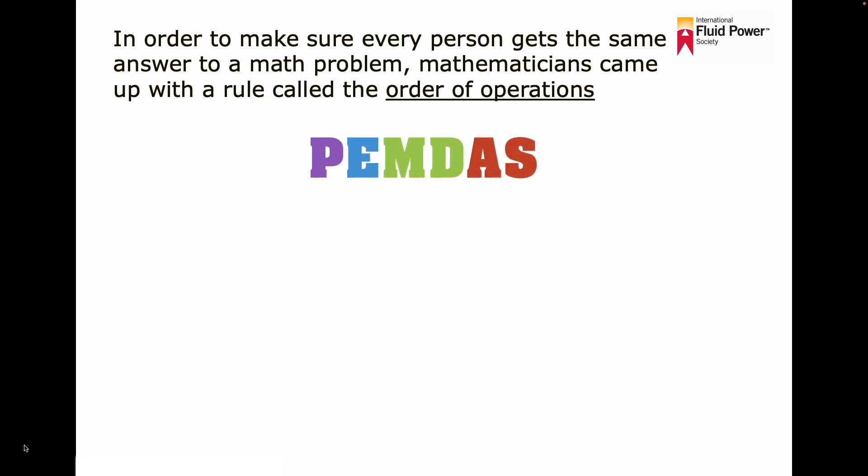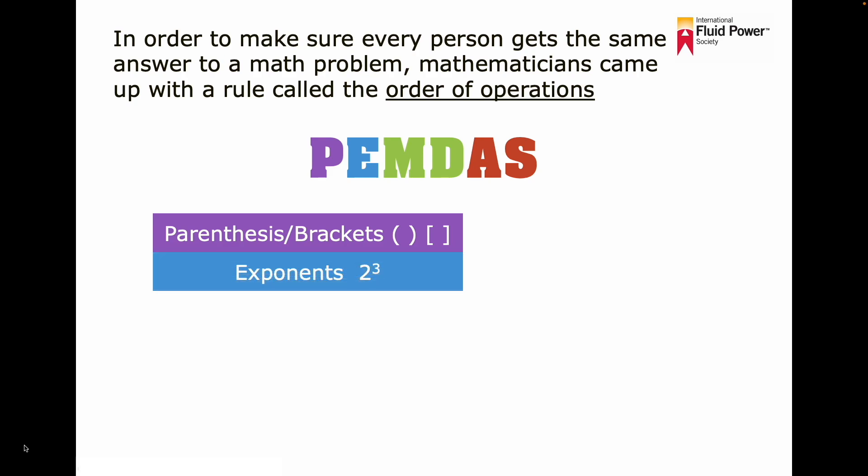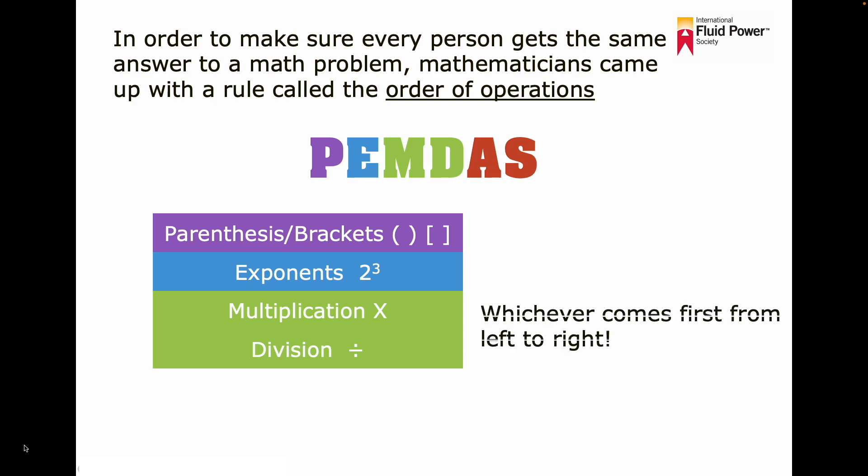So what is PEMDAS? It's an acronym that stands for first, parentheses and brackets, second, exponents, third is multiplication, then next comes division, whichever comes first from left to right in multiplication and division.